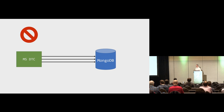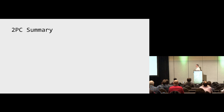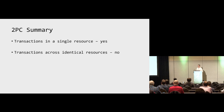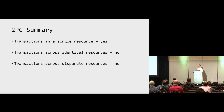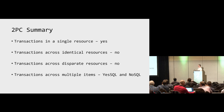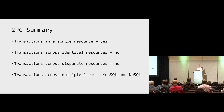To summarize: transactions within a single resource — yes, we can do that. Transactions across identical resources, like two instances of the same database — we cannot. Transactions across disparate resources, like a database and a queue — we cannot. And for NoSQL, we can't even do transactions across multiple documents in some cases.